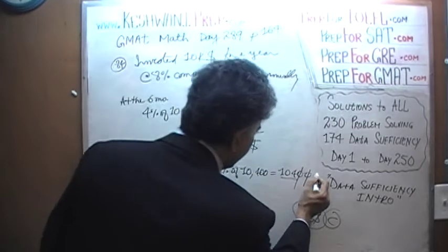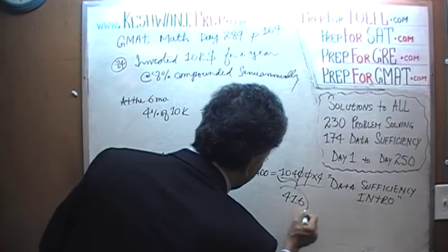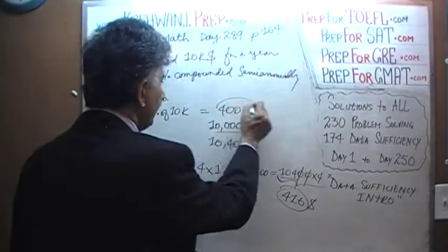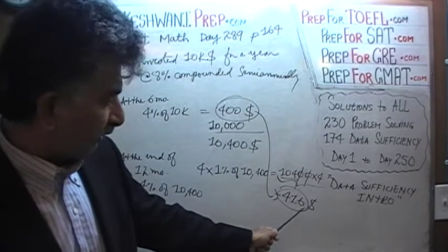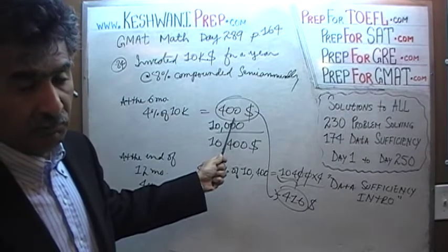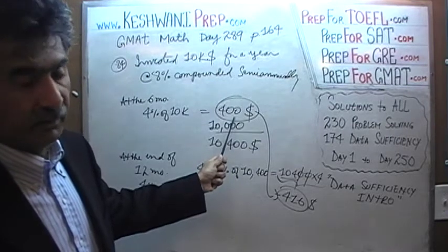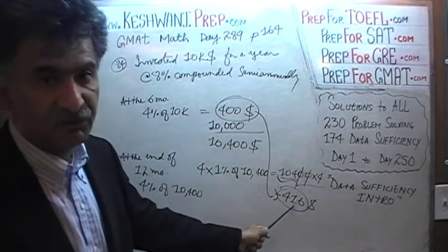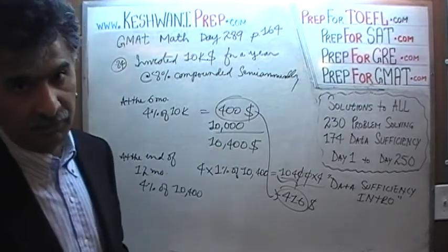In the second half of the year we earned $416; in the first half we earned $400. The additional $16 is due to compounding — it represents 4% of the $400 earned in the first half, since that $400 is also earning interest. 1% of $400 is $4, and 4% of $400 is $16. The total interest earned is $816.